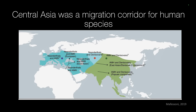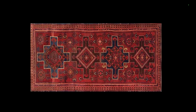Central Asia was and still is a migration corridor for human species. Going back to what has been discussed, we know that Neanderthals and Denisovans existed in the region, but even in more recent times we see a lot of migration and human interactions. In my research, we are interested in disentangling this rich tapestry using evidence from genetics, archaeology, historical records, and linguistics to understand how Central Asian genomes came to be.